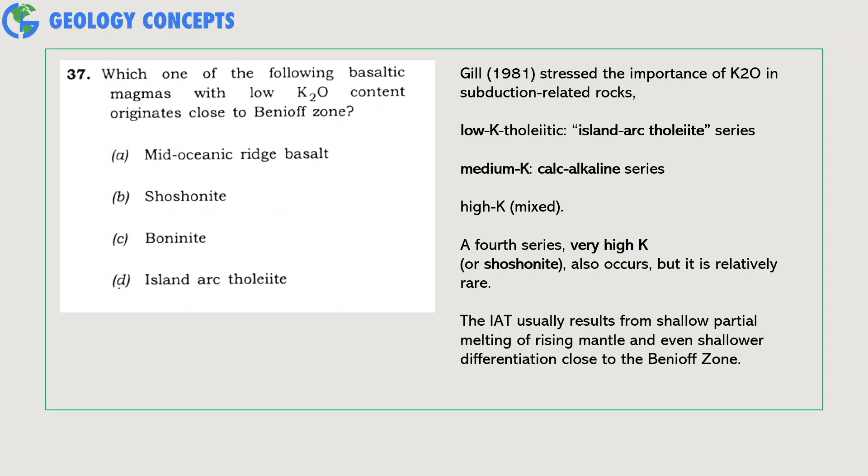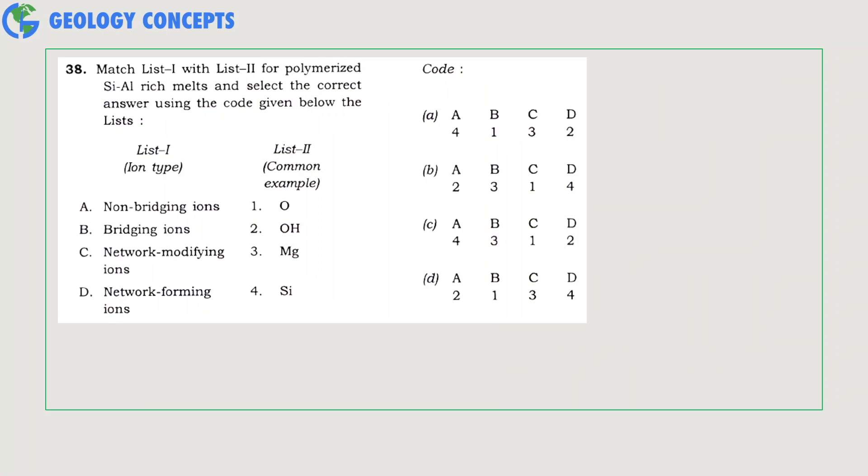On the other hand, island arc tholeiites originate due to subduction of oceanic lithosphere subjected to partial melting close to the Benioff zone. Hence, option D, island arc tholeiites, will be the right answer.